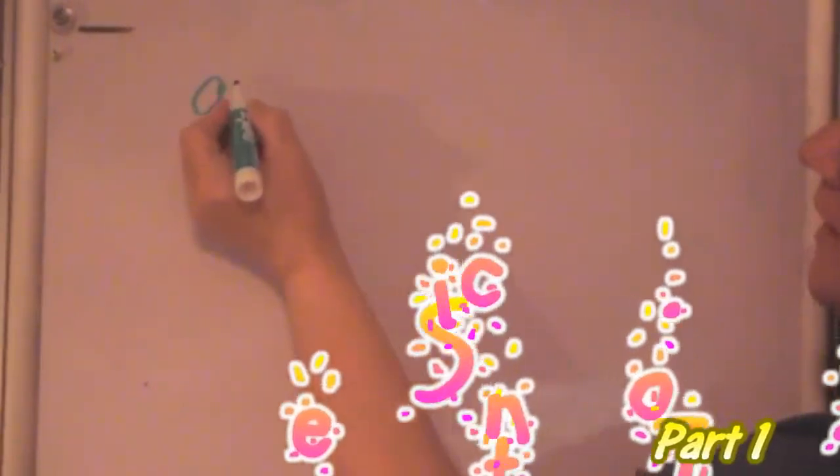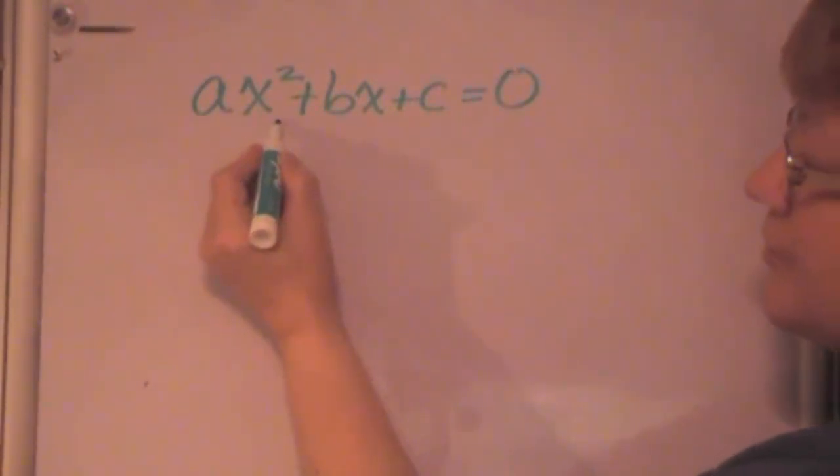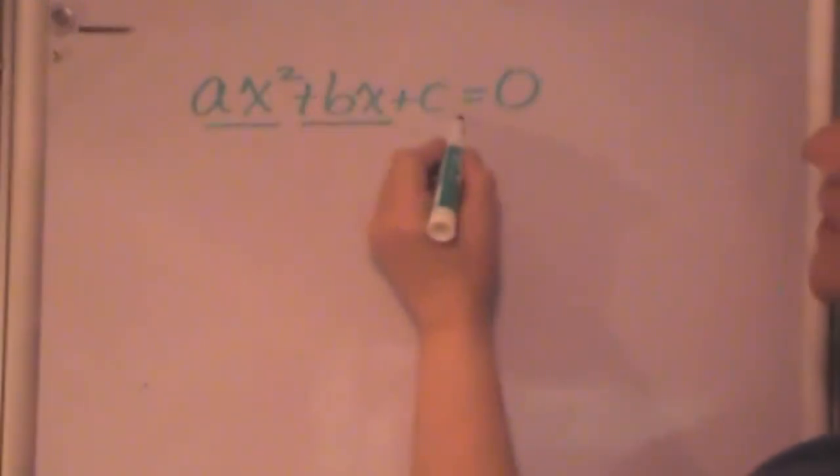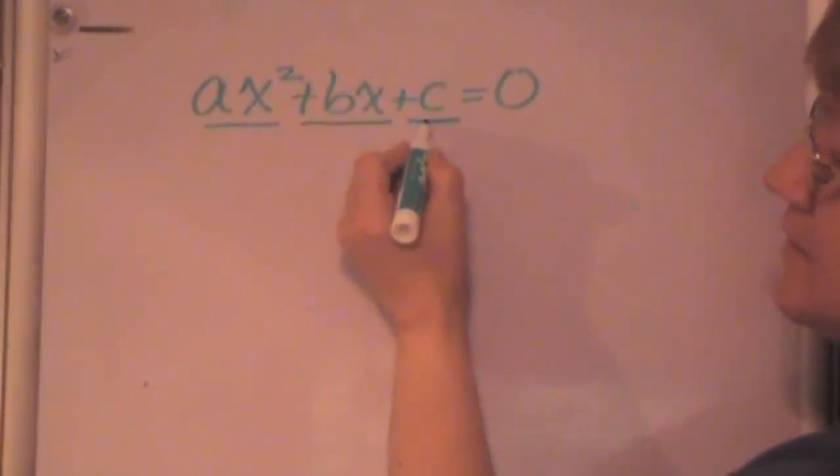Okay, I haven't talked to you much about the standard form of a quadratic equation, but I'm writing it as we speak here, and this is the standard form, where you put the x² term first, followed by the linear x term, and then your constant. In this case, a, b, and c are just plain numbers. X is our variable.